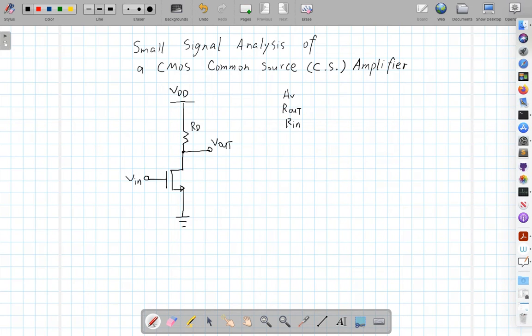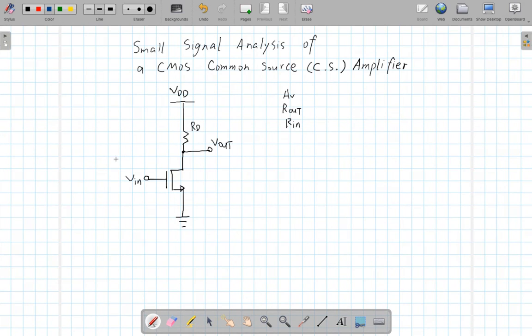As you can see here, this is an example of a common source configuration. The input is at the gate, the output is at the drain, and the source is connected to the ground. The gate and the drain share the common source. That's why we say this is a common source configuration.